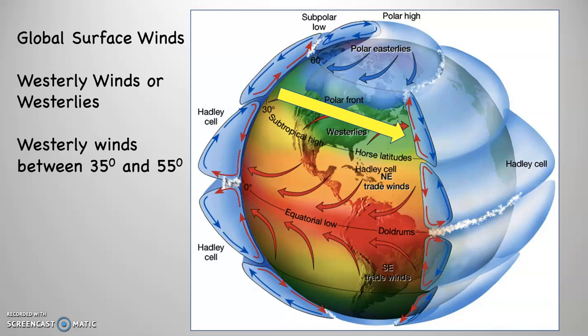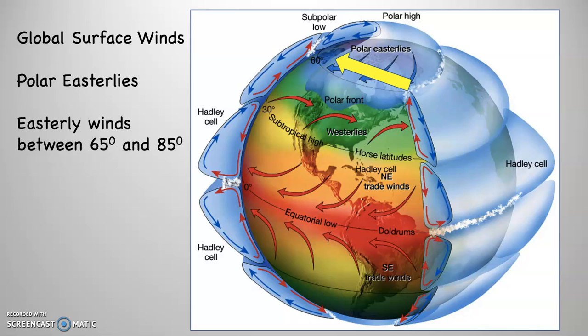Sometimes we're in the westerly winds, which allows for storms that are out in the Pacific to come to us, and sometimes we're not in the westerly winds. But if you're up in Oregon, Washington, British Columbia, they are always sitting in the westerly winds, and as a result those areas tend to be significantly wetter than southern California.